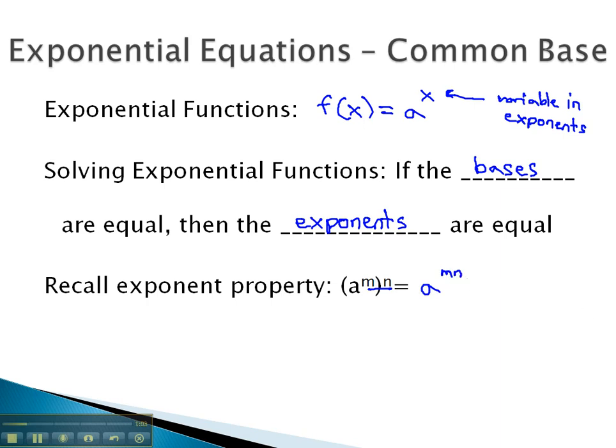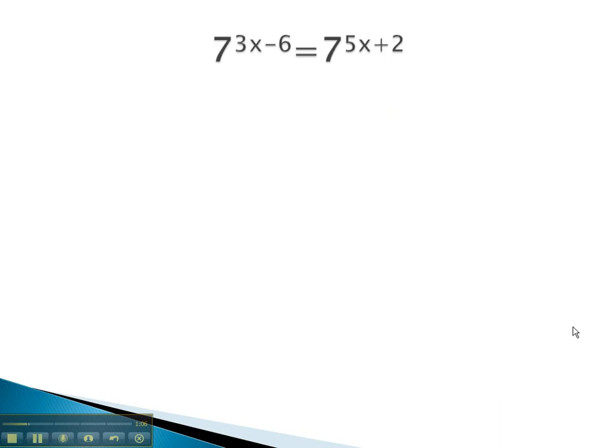Let's take a look at some examples where we do this. In this problem, we'll see that we've got the same base of 7 on both sides. Because those bases are equal, we also can say that these exponents must be equal as well.